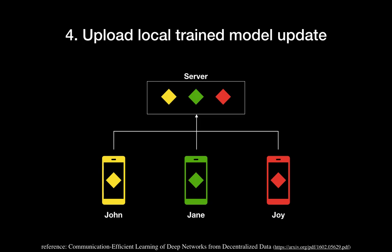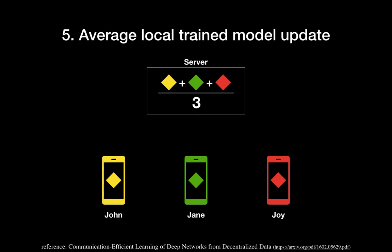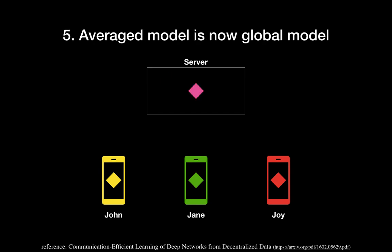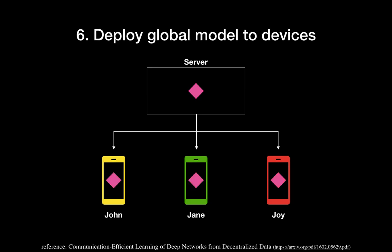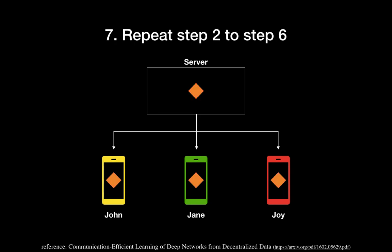They send these model updates to the server. The server averages these values and applies this averaged value to the next model. The server now has the next model, which is the pink diamond. The server deploys this second model to each device, so now each device has the same pink diamond — the same model. We can repeat this process from step 2 to step 6 until we have the smartest model.